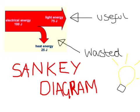This is a Sankey diagram which shows 100% or 100 joules of electrical energy put into the light bulb. We get 75 joules or 75% back out as light energy, which is useful because it is what it is intended for.